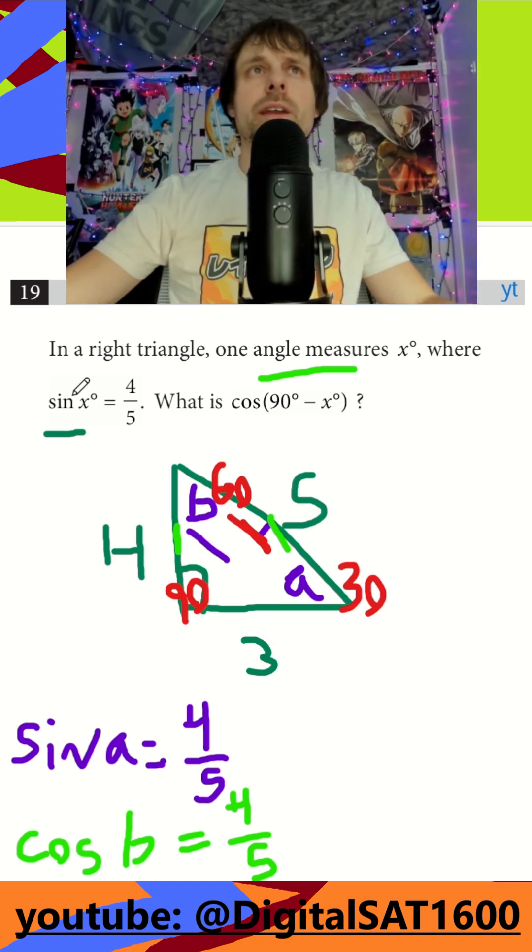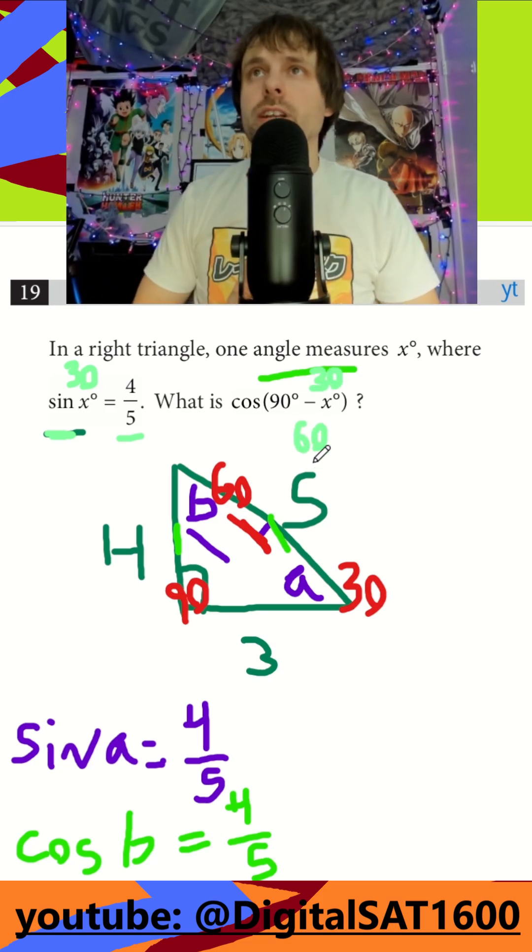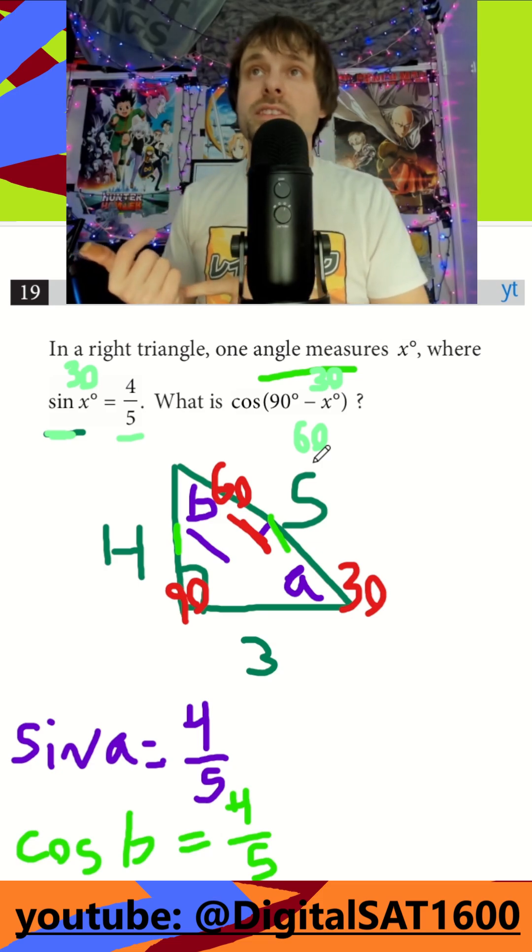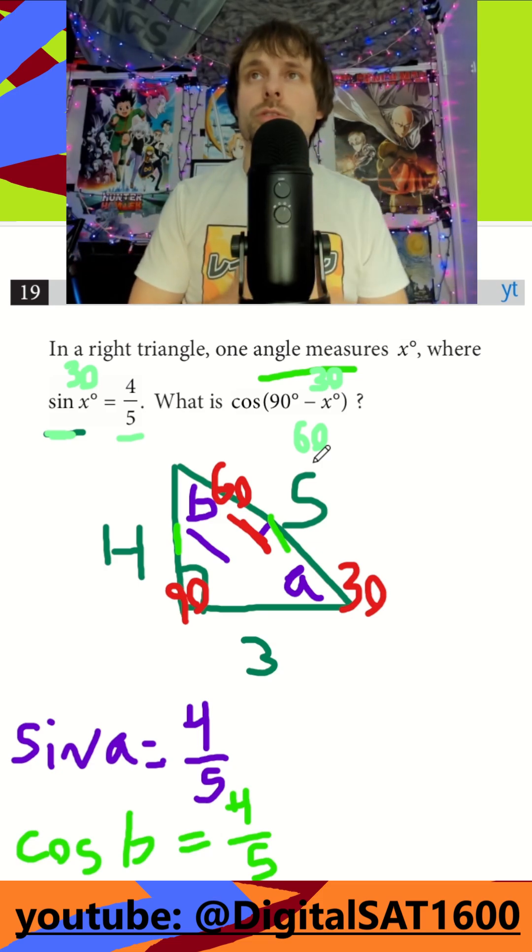And let's look at their example. They say sine of X is going to be 4 fifths. So say X is 30 degrees. Cosine of 90 minus X, so that's going to be cosine of 90 minus 30, or cosine of 60. So we just demonstrated that, again, sine of 30 and cosine of 60 should be the same thing, according to our little right triangle.